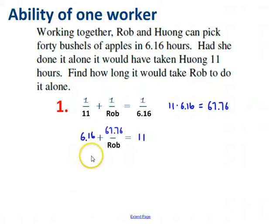But wait a minute. This should have been... Well, it's not obvious. It shouldn't be a surprise at any rate. What happened here was this 1 over 11 became that number, 6.16. And likewise, this 1 over 6.16 became that number. So really what you've done is you've swapped these two numbers and made them the numerators over 1. And you're left with what you had here before, 67.76 over Rob.